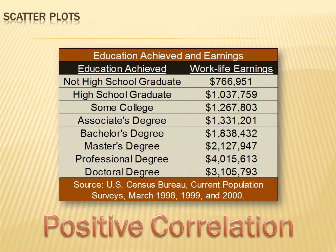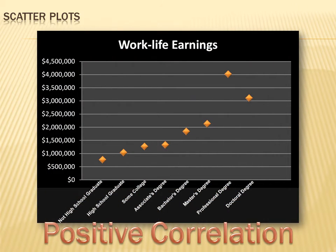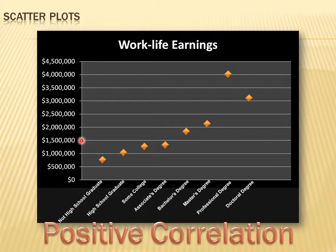I wonder if we could understand this better by creating a scatter plot — plotting the amount of education on one axis and the expected earnings on the other. We call it a scatter graph because we scatter the data points onto the graph and mark the points where there's a correspondence between the x-axis and the y-axis. We end up with a series of points scattered along the graph.